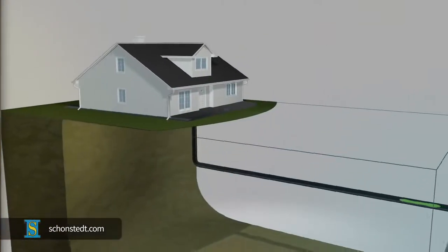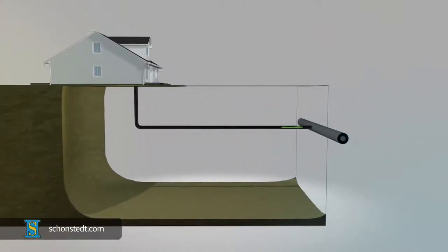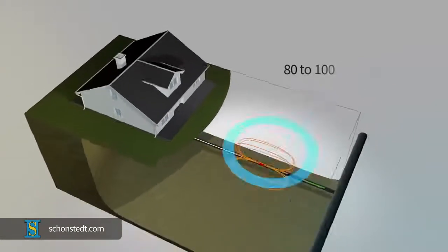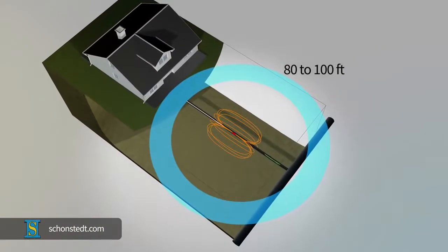Because sondes are small and battery-operated, the signal they emit is limited. In addition, the sonde has to be pushed mechanically into the pipe by an operator. Because of this, sonde locating is usually done within relatively short distances, between 80 to 100 feet or approximately 25 to 30 meters.